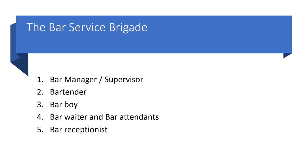The bar service brigade refers to the people who make up or operate a bar. The highest position is the bar manager, who plans, directs, oversees, and controls bar operations. The supervisor, or bar captain, reports directly to the bar manager. Depending on the size of the bar, there may or may not be a supervisor. Members of the bar service brigade include a bartender, a bar boy, bar waiter or bar attendants, bar receptionist, and sometimes a cashier.